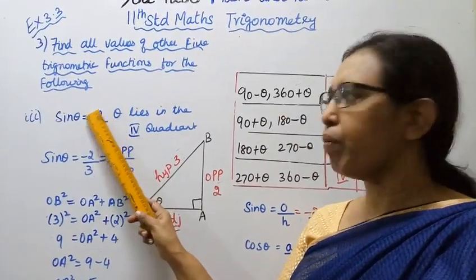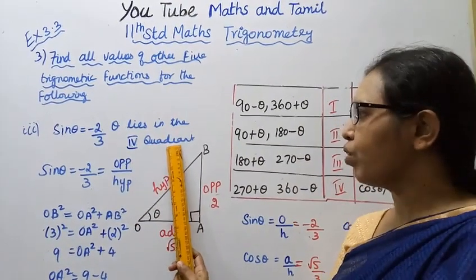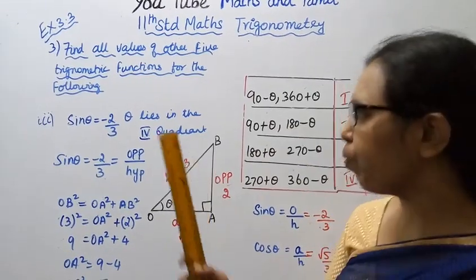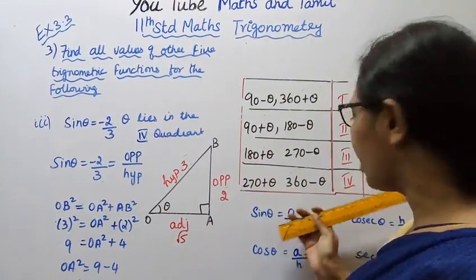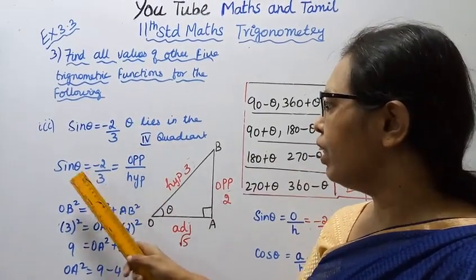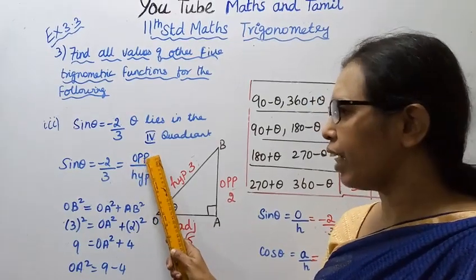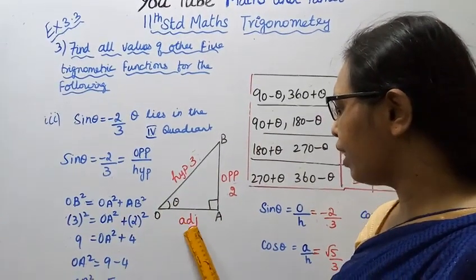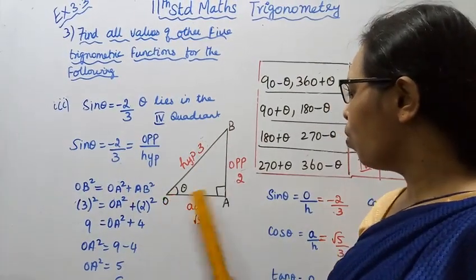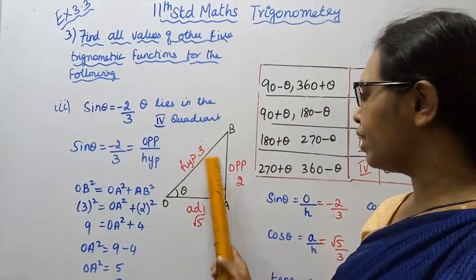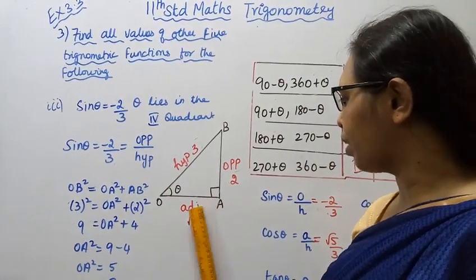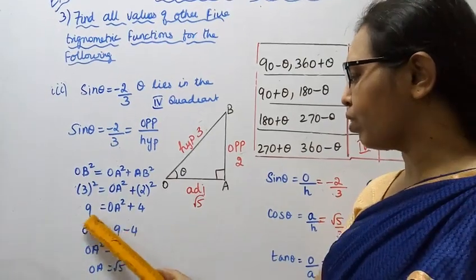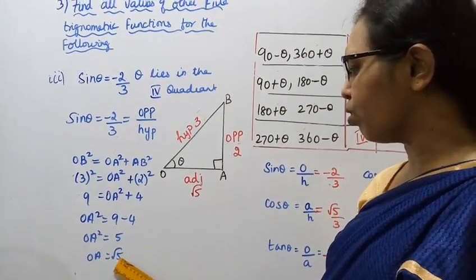Third sub-division: sin theta equals minus 2 by 3, theta lies in the fourth quadrant. In the fourth quadrant, cos and secant are positive; sin is negative. Sin theta equals opposite by hypotenuse, so opposite equals 2 and hypotenuse equals 3. By Pythagoras: OA squared equals 9 minus 4 equals 5, so OA equals root 5.